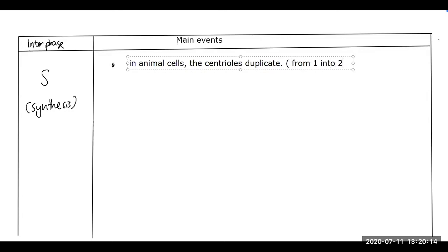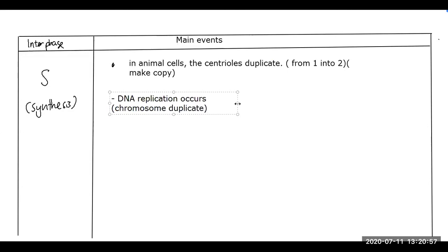After G1 is S phase. S stands for synthesis. In animal cell, the centrioles duplicate. Duplicate means from 1 into 2, or you can say make a copy. S phase means synthesis phase. It also stands for DNA replication phase. DNA replication occur, the chromosome duplicate. The meaning of DNA replication means the DNA make a copy of itself.